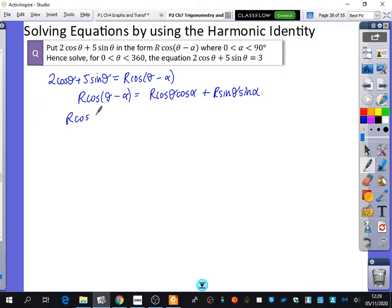Which means that R cos α is 2, and R sin α is 5. So R is the square root of 2 squared plus 5 squared, which is root 29, because 4 plus 25 is 29. And tan α is sin α over cos α, which is 5 over 2.